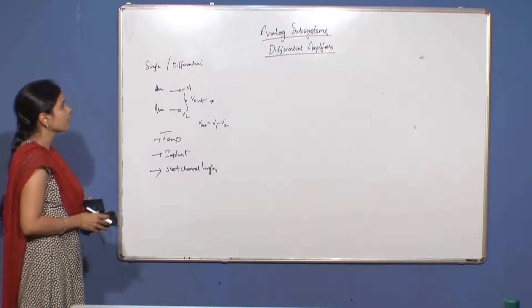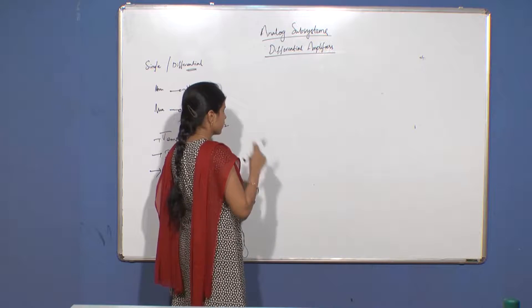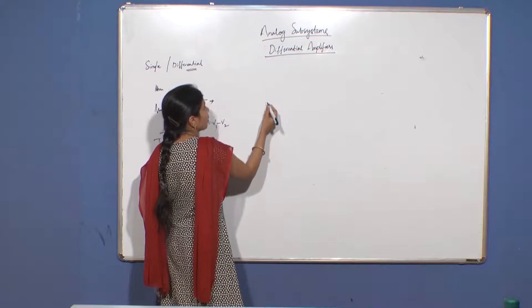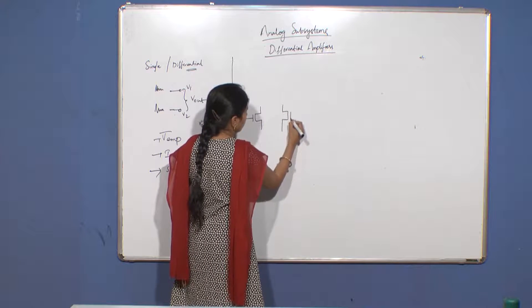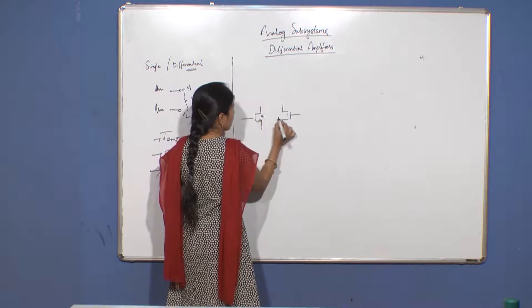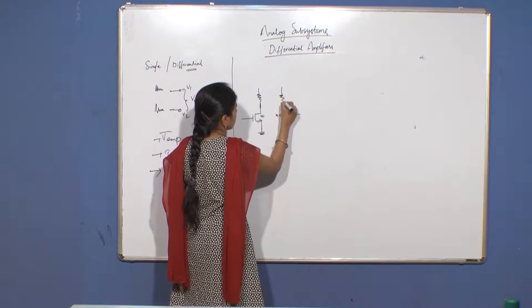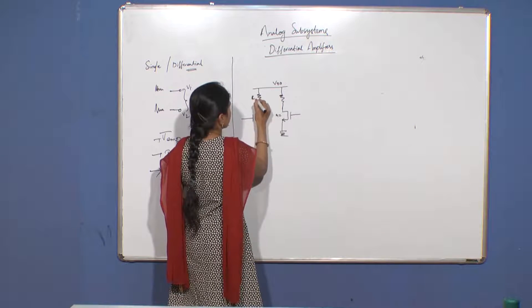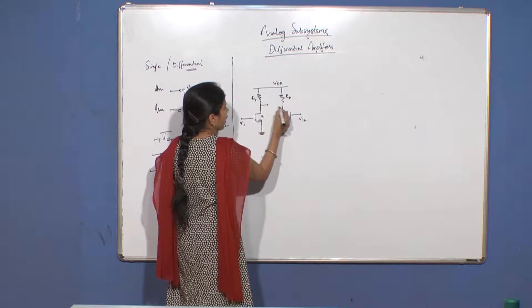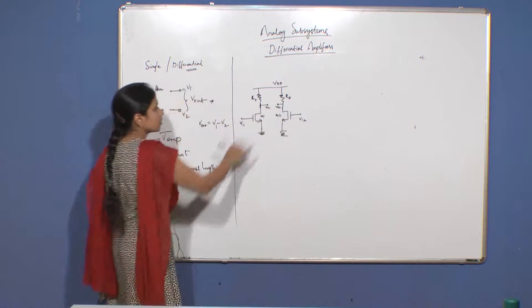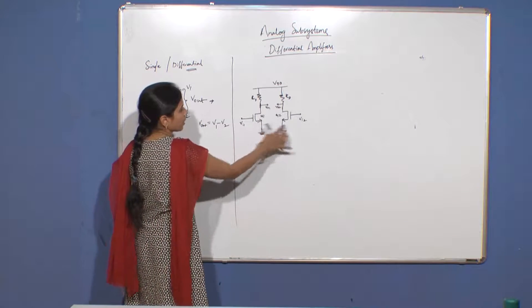Today we will learn about differential amplifiers which use this differential-ended scheme. One way to make a differential amplifier is by using two single-ended amplifiers. You have two N-MOSFETs named M1 and M2 with pull-up resistors R_D connected to V_DD, with inputs V_i1 and V_i2 and outputs V_01 and V_02. This is the basic model of the differential amplifier.